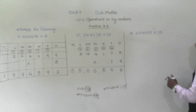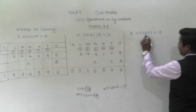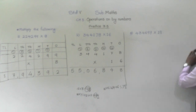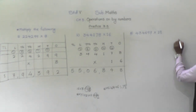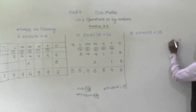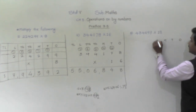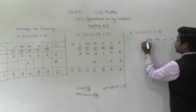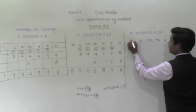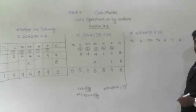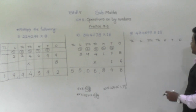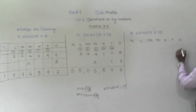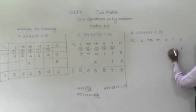Let's solve the next question: 4,34,697 into 18. We write the places: ones, tens, hundreds, thousands, ten thousands, lakh.